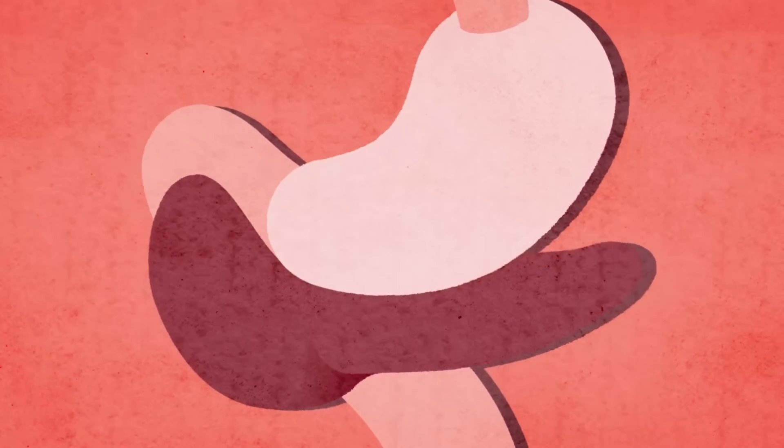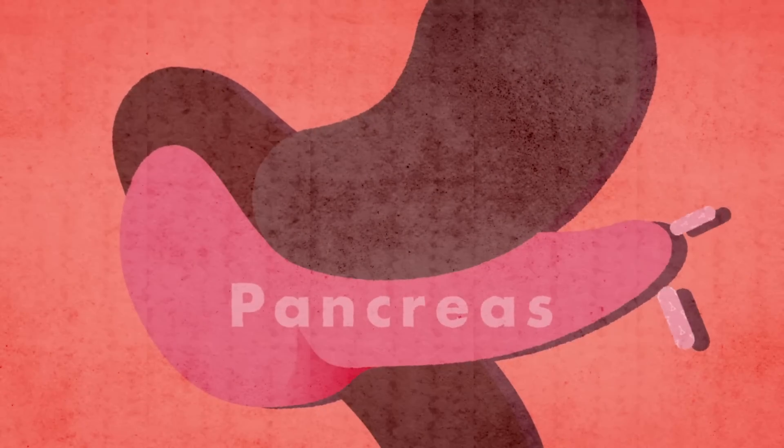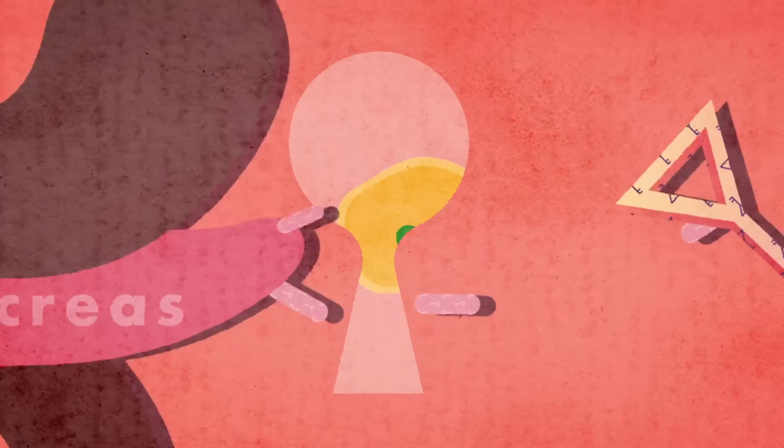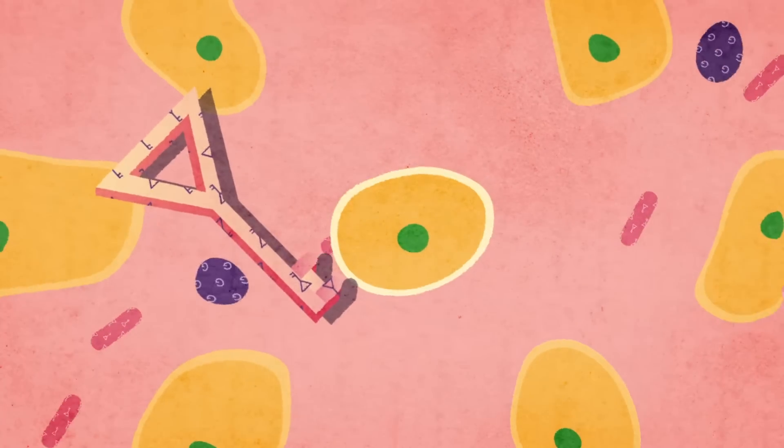Insulin is made in the pancreas of your body and it is the key that unlocks the doors of the cells to let glucose in.